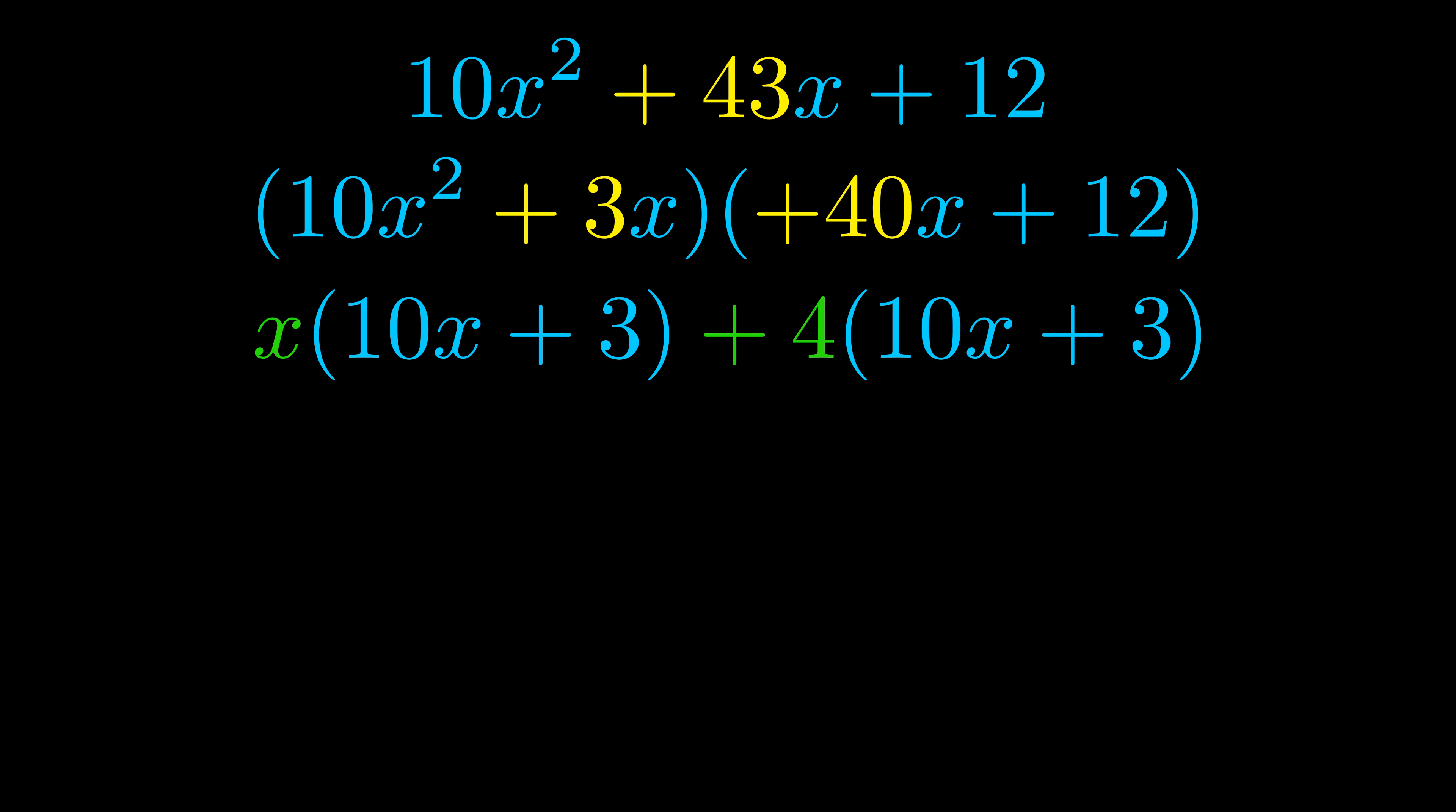Notice also how what remains inside of the parentheses is the same in both cases. The blue values are the same. Those blue values will become one of our factors and we will combine the two green values, the GCFs that we pulled out, to get the other one. And that is our fully factored equation.